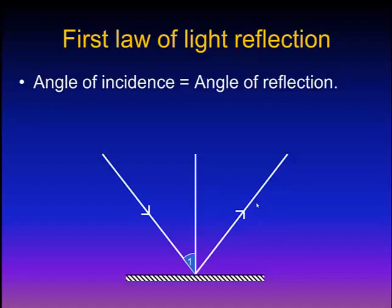The second angle is between the normal and the reflected light ray, which is called the angle of reflection. As the first law of light reflection states, the angle of incidence is always equal to the angle of reflection.